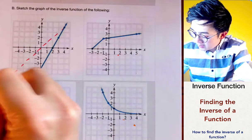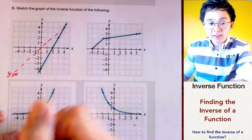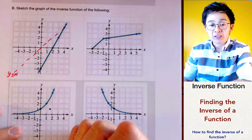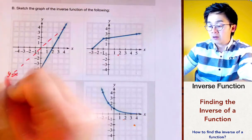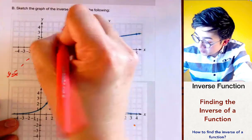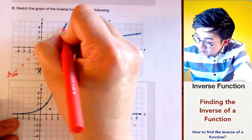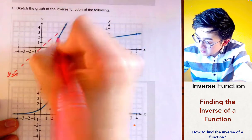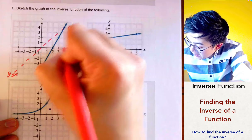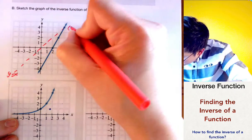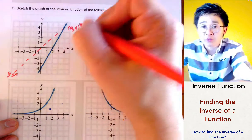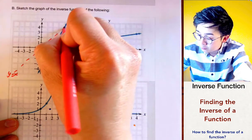To find the inverse function, we know it's a reflection of the function over the line y = x. We're going to produce a new graph that is a reflection of the blue graph along the y = x line. We start by identifying key points — this point is at (4, 4), so its inverse is also (4, 4).